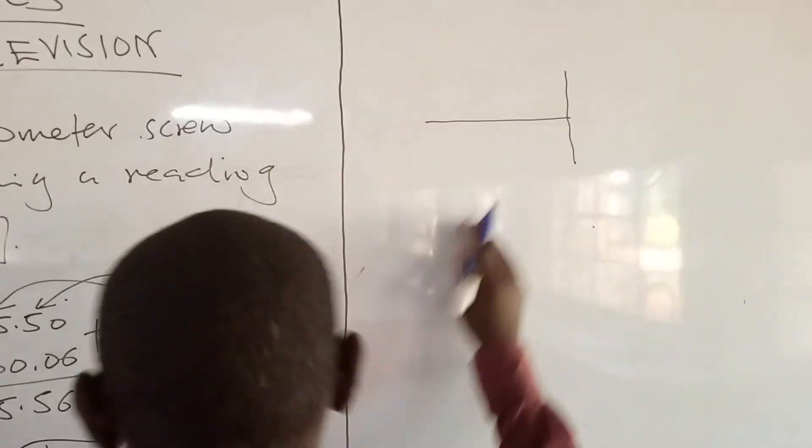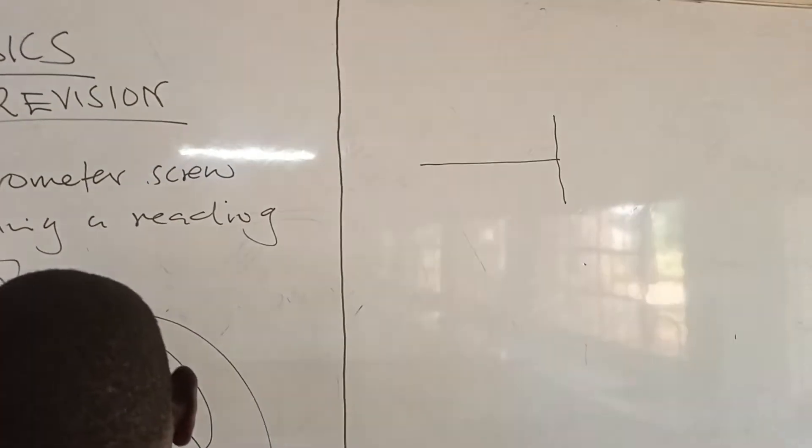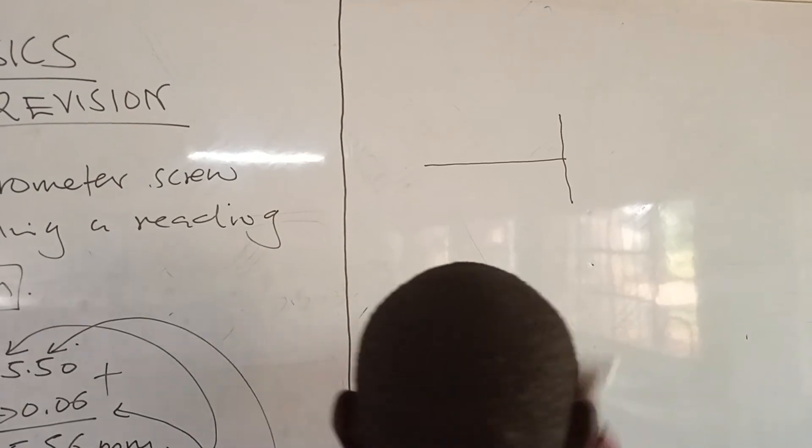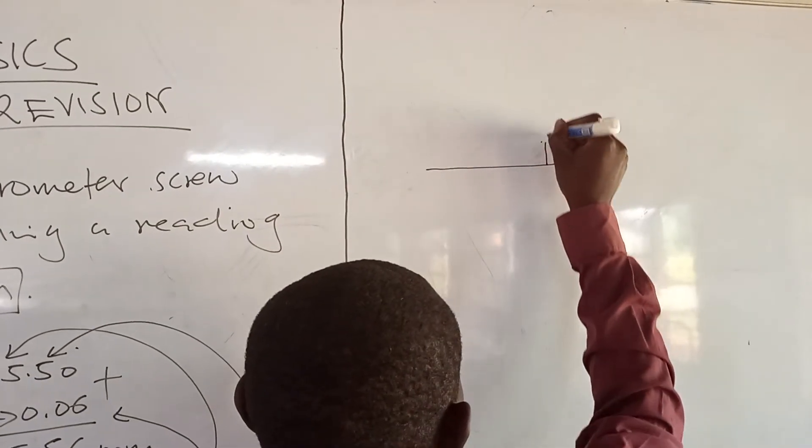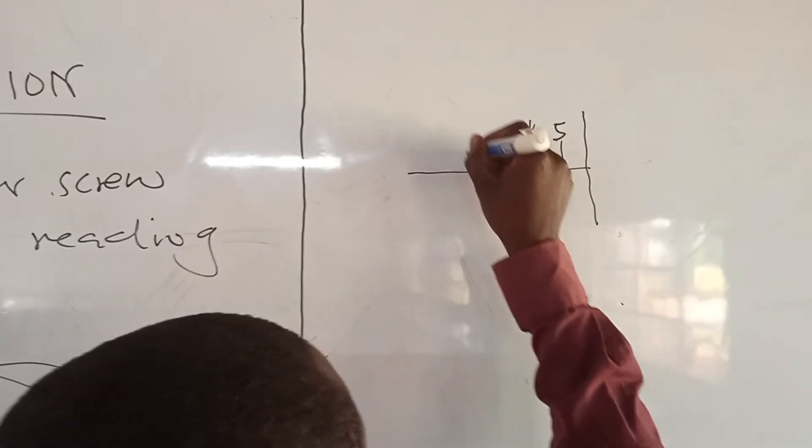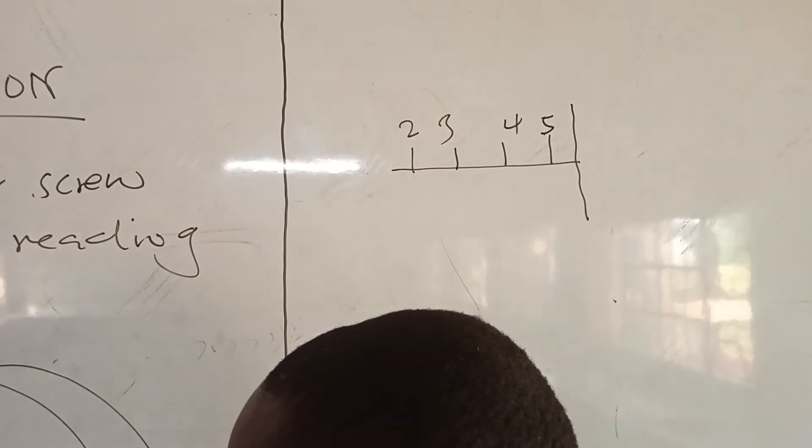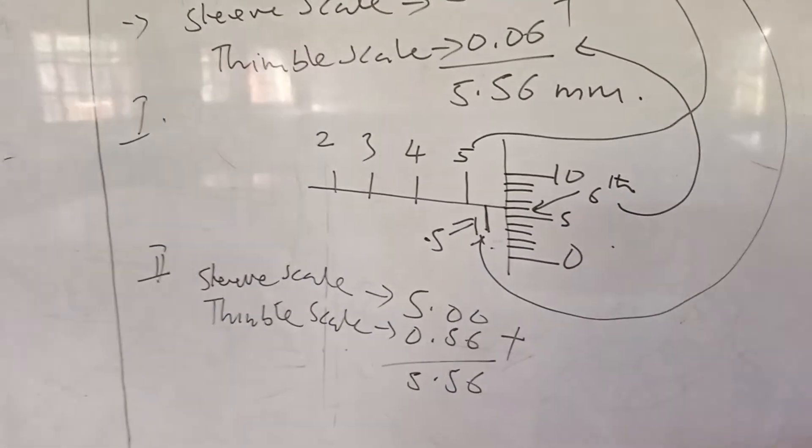If I draw a thimble scale and a sleeve scale showing 5.00, so I put 5 here, 4, 3, 2 like that.